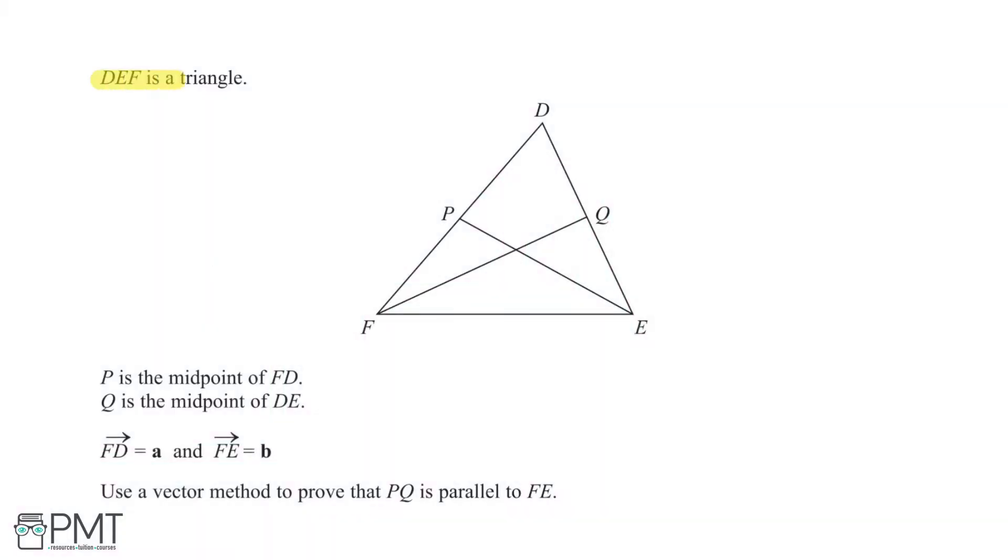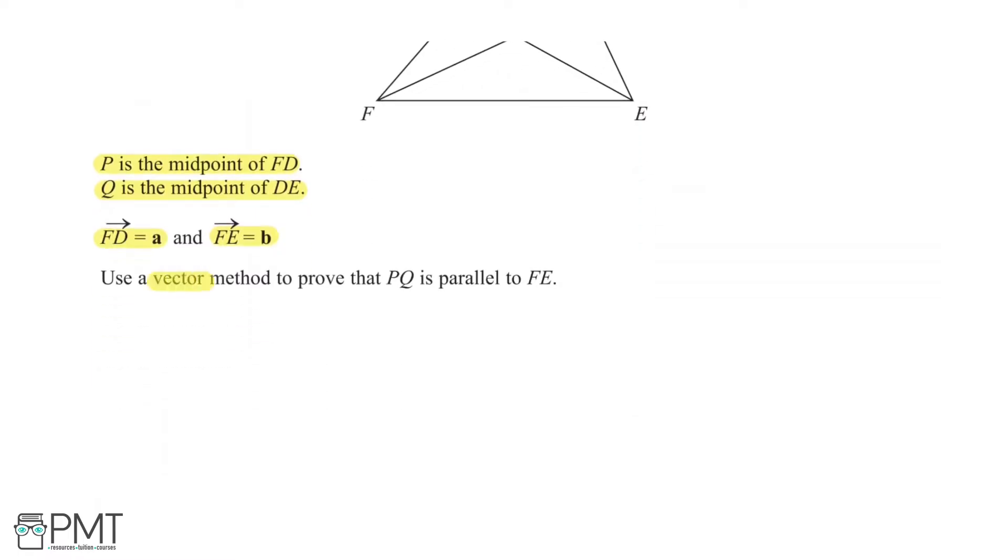We are told DEF is a triangle. We are then told P is the midpoint of FD, and Q is the midpoint of DE. We are told that vector FD is A, and FE is B. And we have been asked to use a vector method to prove that PQ is parallel to FE, and this question is worth four marks.